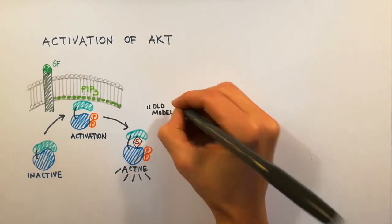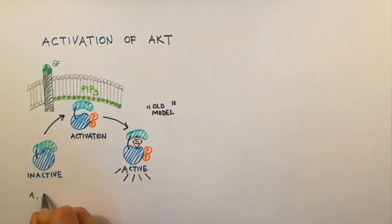Two main questions arose from this model. First, how is the spatial control of AKT signaling maintained if AKT just randomly diffuses inside the cell? And second, how is the timing of the AKT signaling coupled to the activating stimulus?